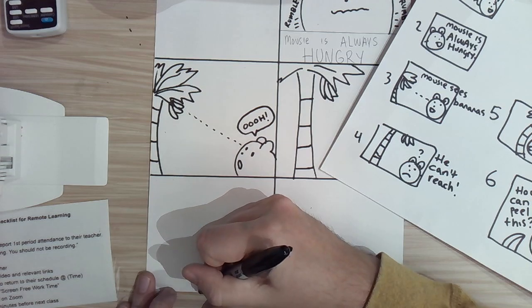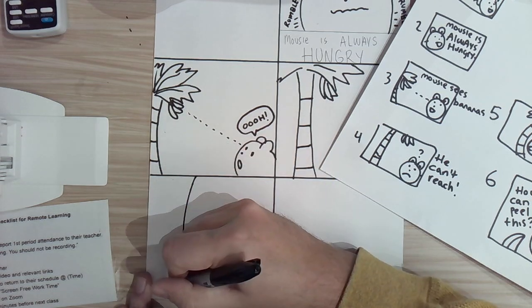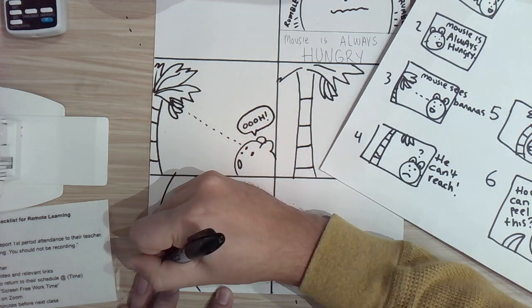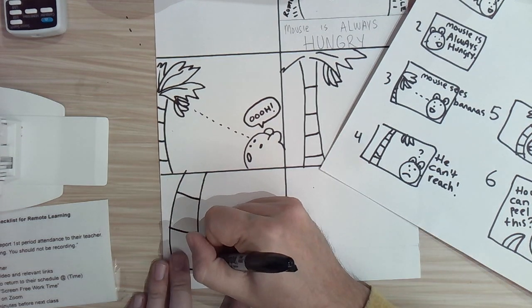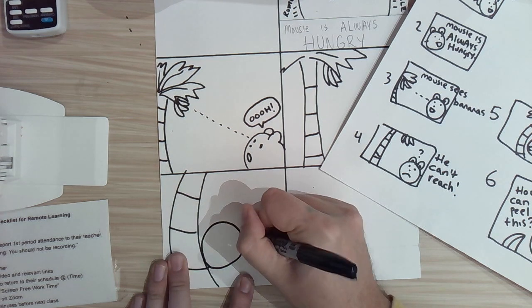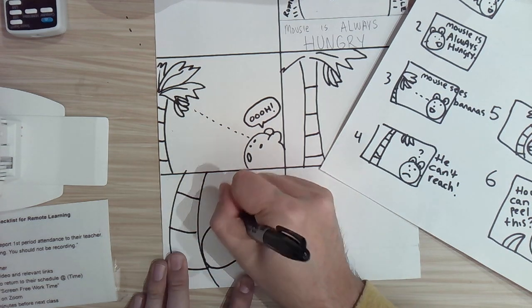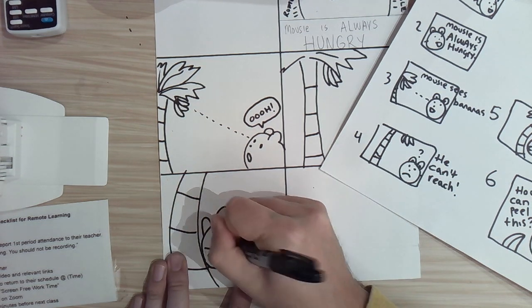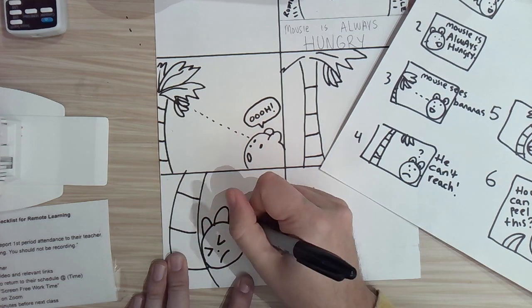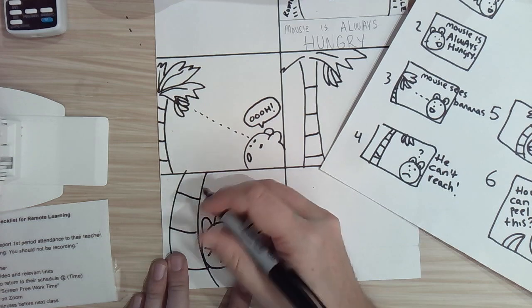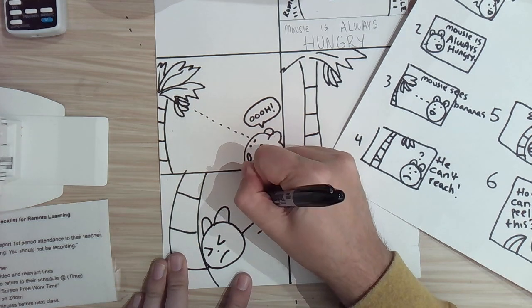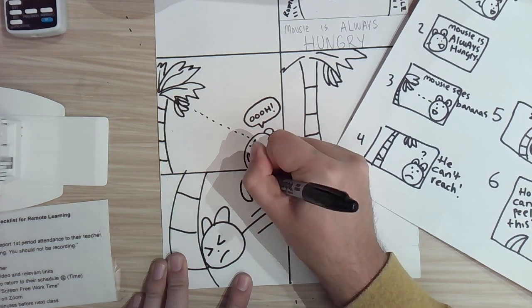I can zoom in a little bit more. Show that he's at the bottom of the tree. I'm going to bend that tree to make it look like he is hitting it hard. I'm going to give him some action lines to make it look like he's moving. And the bananas are plopping down.